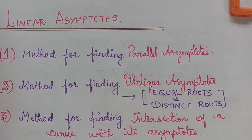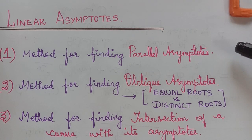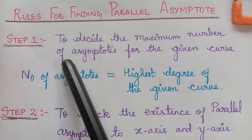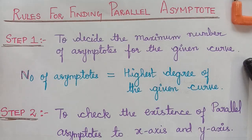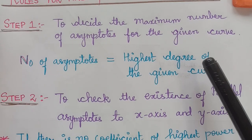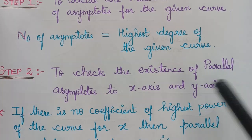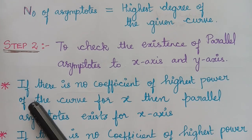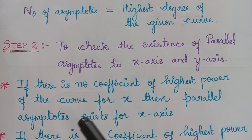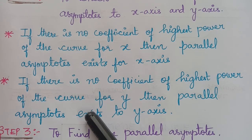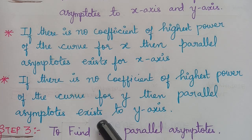Now in this video lecture, we will be learning the method for finding parallel asymptotes. The first step is we have to decide the maximum number of asymptotes to the given curve — the number of asymptotes will be equal to the highest degree of the given curve. The second step is we have to check the existence of parallel asymptotes to the x-axis and y-axis. If there is no coefficient of the highest power of the curve in terms of x, then the parallel asymptotes exist for the x-axis. Similarly, if there is no coefficient of the highest power of the curve for y, then the parallel asymptotes exist to the y-axis.